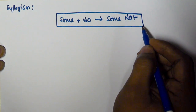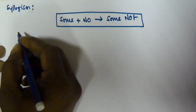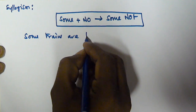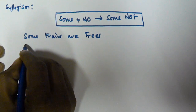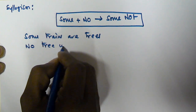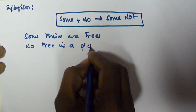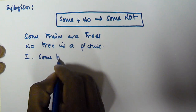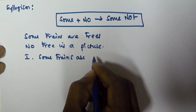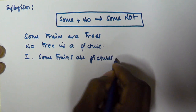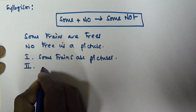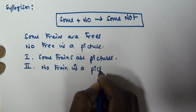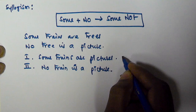Let us consider two given syllogisms. The first one is: 'Some trains are trees.' The second syllogism given is: 'No tree is a picture.' The first conclusion given is: 'Some trains are pictures,' and the second conclusion given is: 'No train is a picture.'